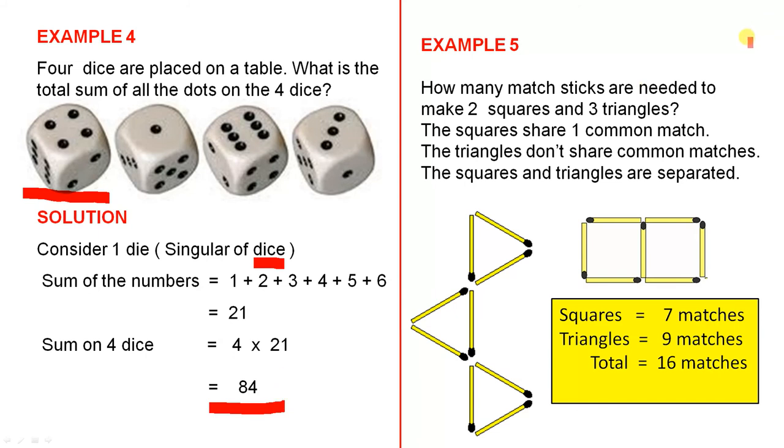Example five. How many matchsticks are needed to make two squares and three triangles? The triangles don't share common matches. The squares and triangles are separated. So firstly, you have two squares. Here they are. That's the common match they share.